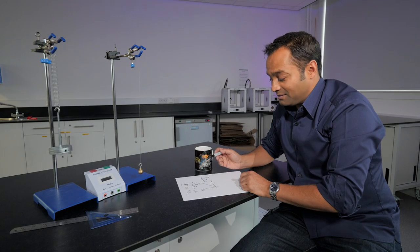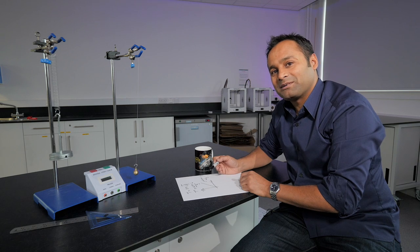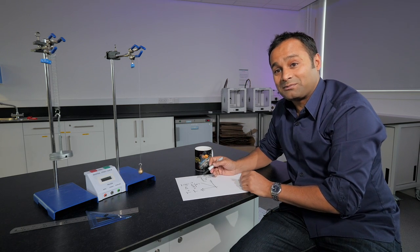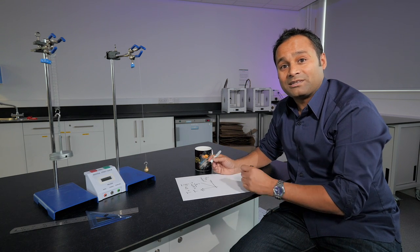You might expect that the uncertainty in your value of g comes from the uncertainty in this gradient. However, the data you can collect using this apparatus is so good that you get tiny error bars which you can't really plot, and therefore you can't really find an error in the gradient. So what do we do?